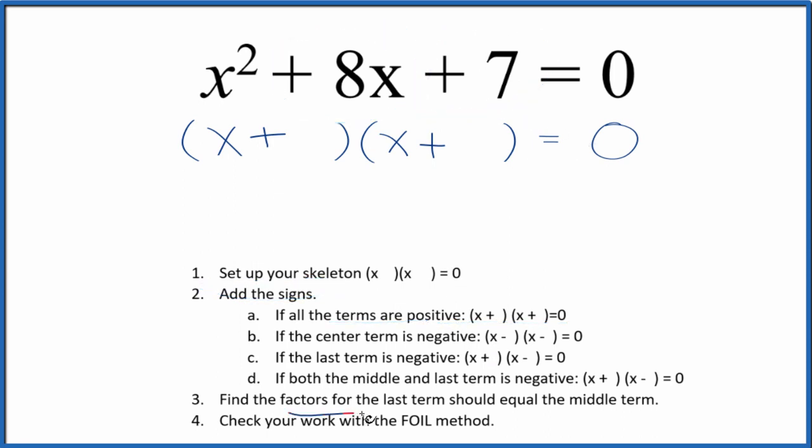Next, we can find the factors for that last term, the 7, that add up to the middle term. And really, for 7, 1 times 7, those are the factors. And 1 plus 7, that equals 8. 1 times 7, that equals 7. So we've factored the equation x squared plus 8x plus 7 correctly.